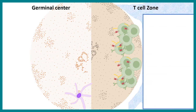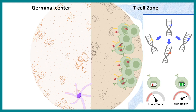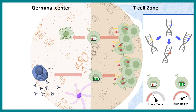Key events in the germinal center include somatic hypermutation — mutations that can increase or decrease the affinity of the B cell's membrane-bound antibody. B cells with high-affinity antibodies are selected and those with low-affinity antibodies are deleted by apoptosis. The high-affinity B cells eventually differentiate into plasma cells. A separate video covers somatic hypermutation in more detail.